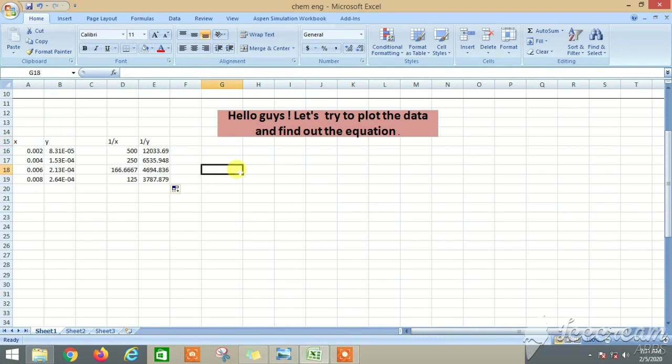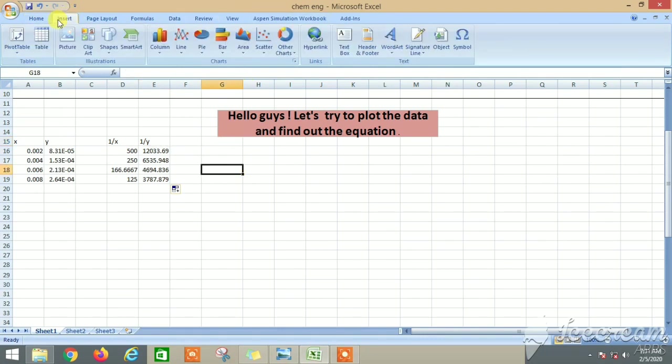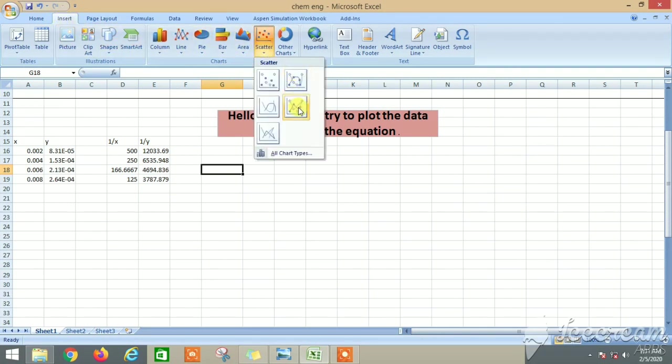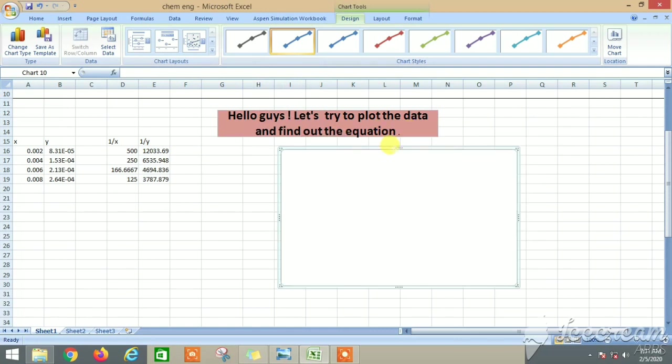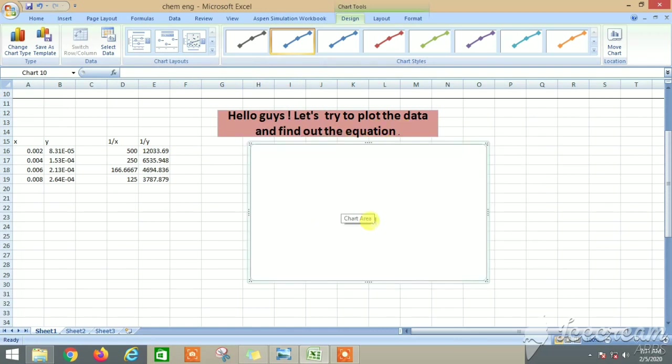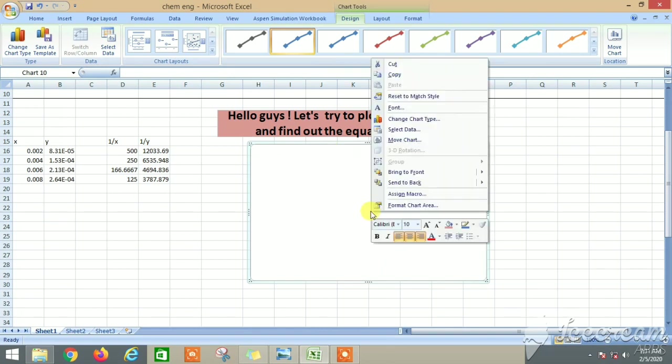Now let's plot it. So how do we plot? Click on Insert, then go to any of this. Let's try out Scatter first. So in Scatter, let's try out this: Scatter with Smooth Lines.